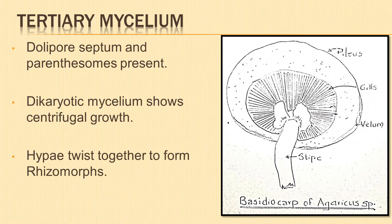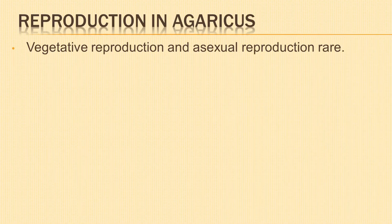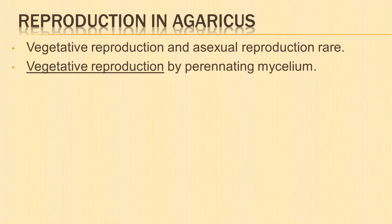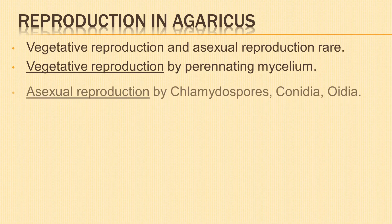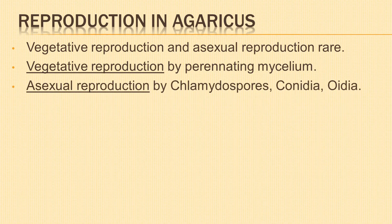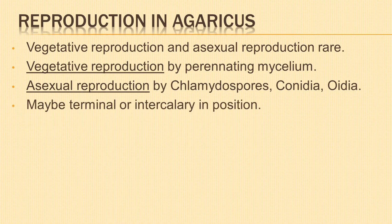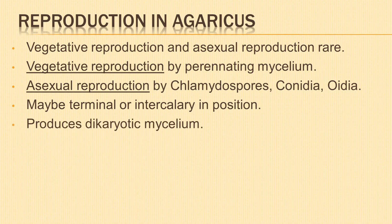Vegetative reproduction and asexual reproduction in Agaricus are rare. The fungus propagates by vegetative means with the help of its perennating mycelium. Asexual reproduction may take place by chlamydospores, conidia, or oidia. They are formed on dikaryotic mycelium during unfavorable conditions and may be terminal or intercalary in position. On return of favorable conditions, they germinate and produce dikaryotic mycelium.